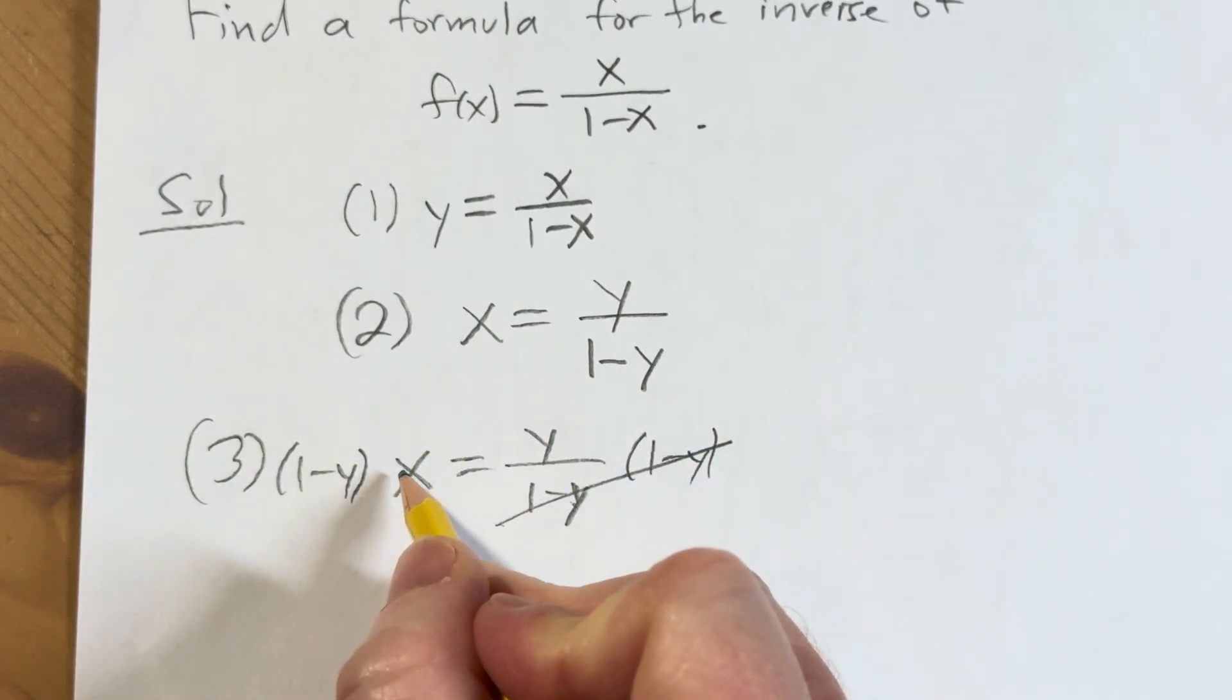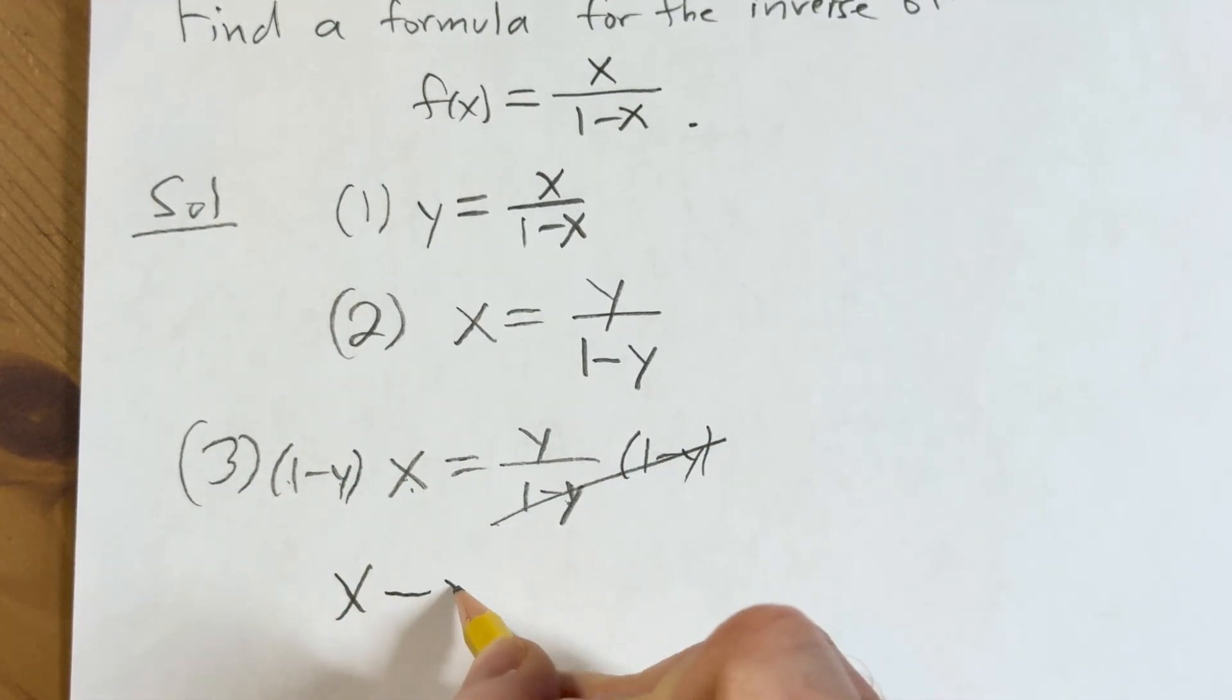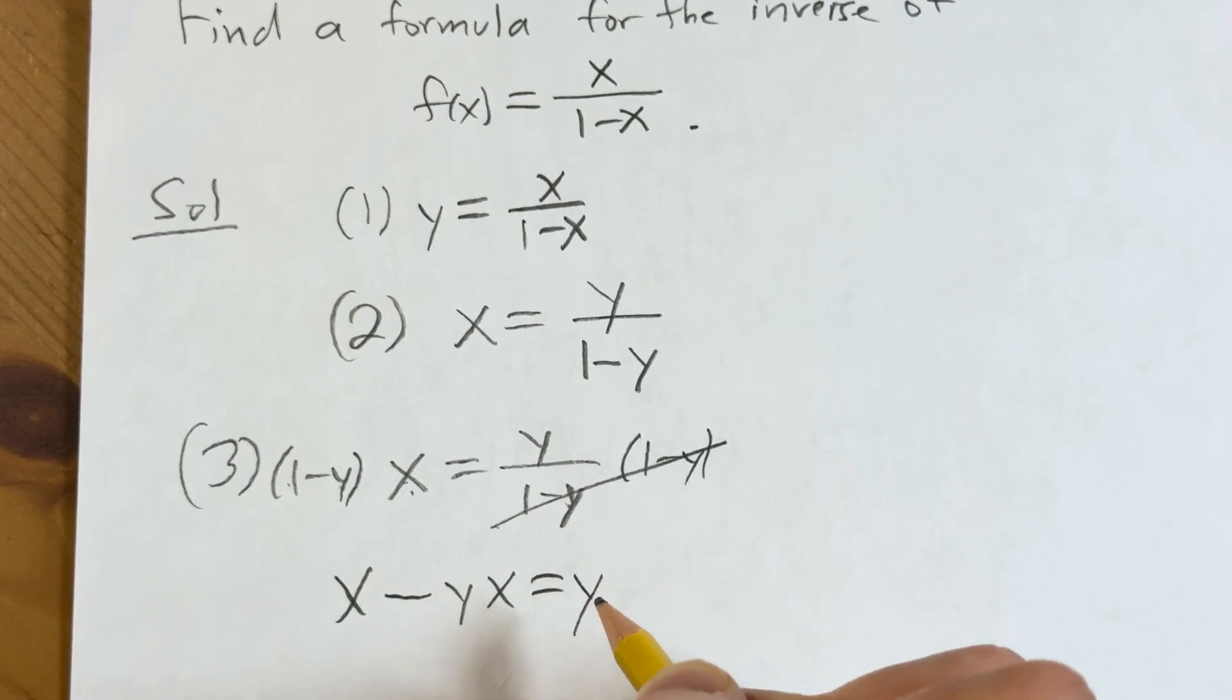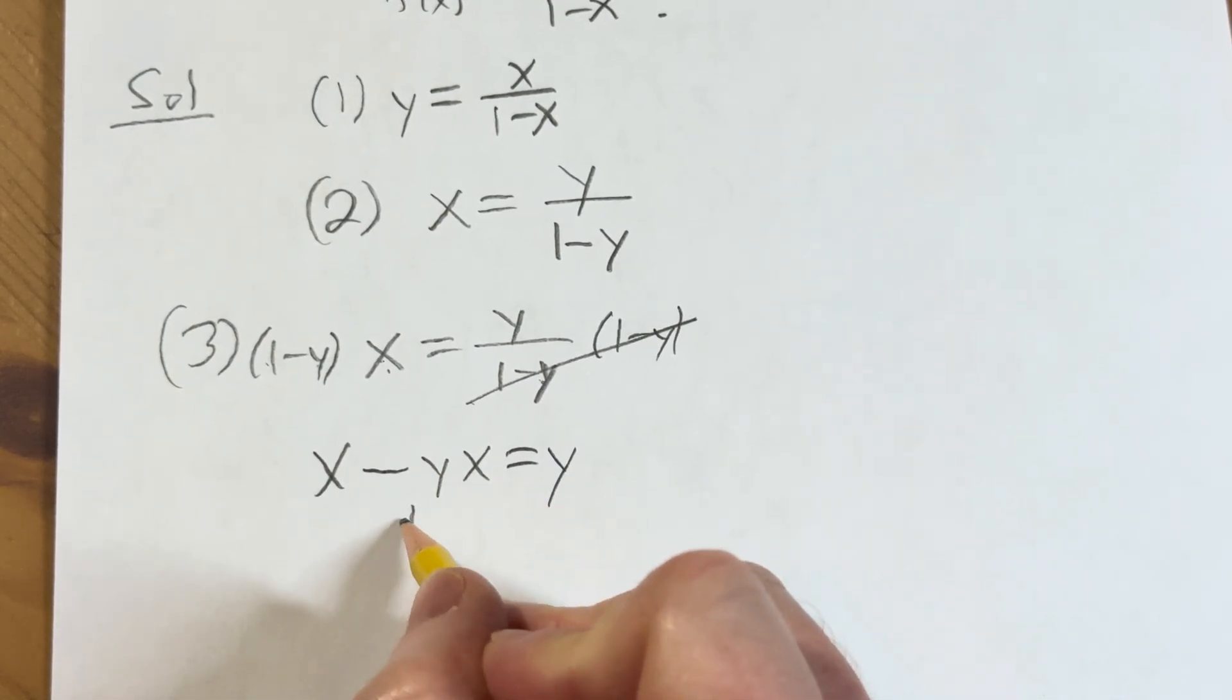These cancel. You can distribute here: x times 1 is x, x times y is yx, and this is y. Now we add yx to both sides.